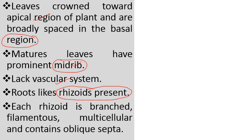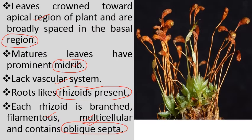Each rhizoid is branched, filamentous, multicellular, and contains unique oblique septa. The basal portion has broadly spaced, small leaves, while the tip is the crown region with densely arranged leaves. From the main axis, the base has rhizoids which are multicellular, branched, and have oblique septa.